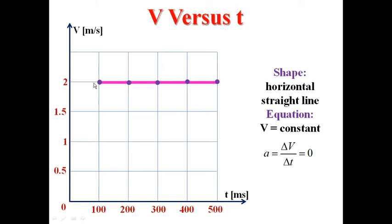V versus T: the velocity is constant. If the graph of V versus T is given and its shape is a horizontal straight line, the motion is said to be uniform rectilinear. The equation of the graph is V equals constant. The slope of this graph is delta V divided by delta T, which is A. In this case, the acceleration is 0.